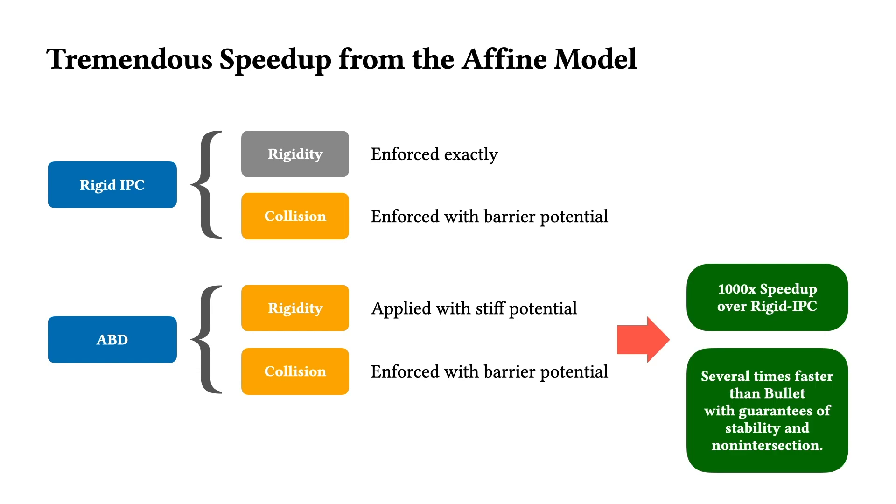This allows ABD to employ efficient and robust linear CCD methods to ensure non-intersection. In turn, this gives ABD on average a three-order magnitude speed up when compared to rigidIPC, and an up to eight times speed up when compared to fast rigid body solvers like Bullet. At the same time, ABD maintains stable and intersection-free trajectories at all time-step sizes.